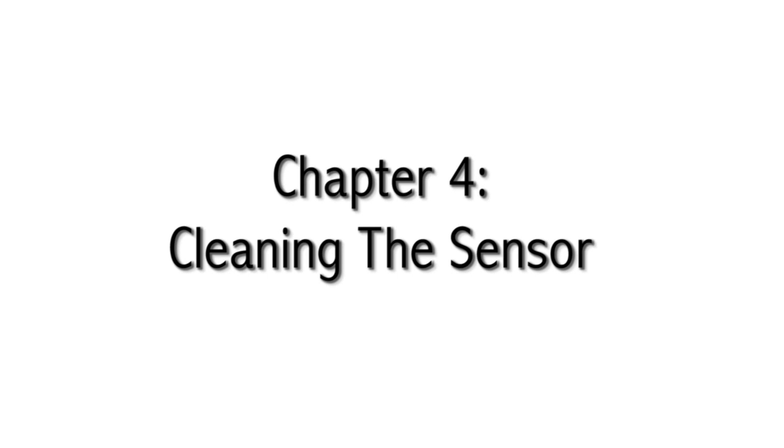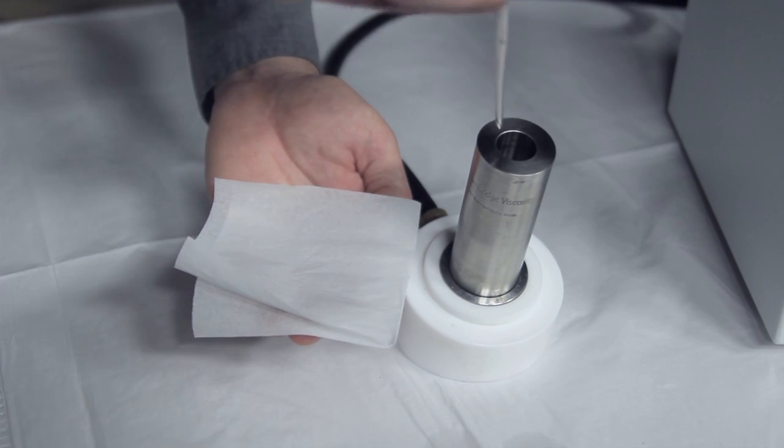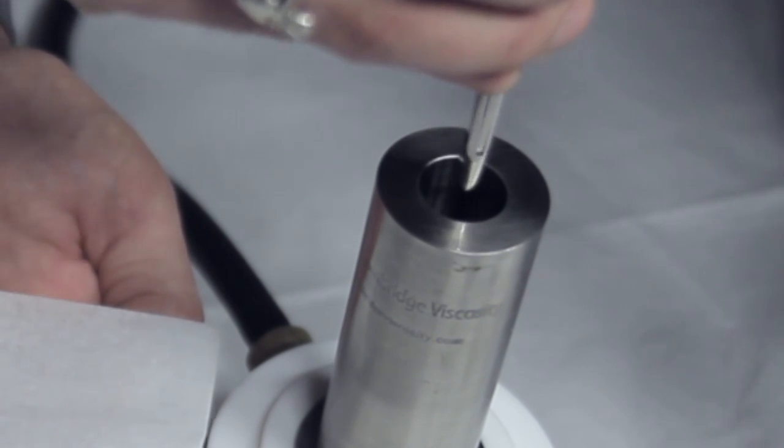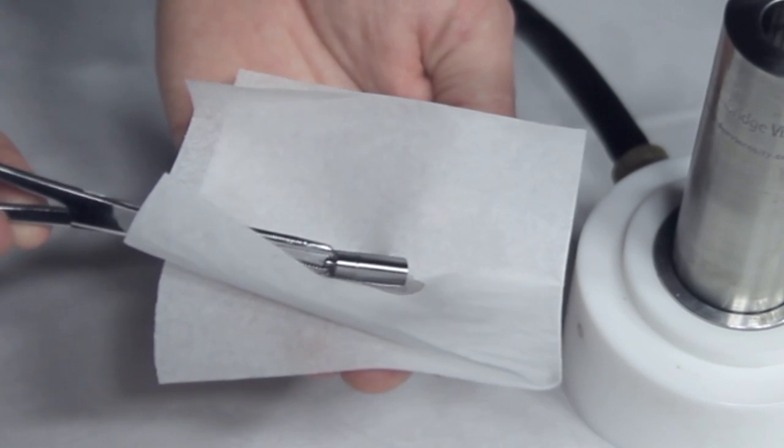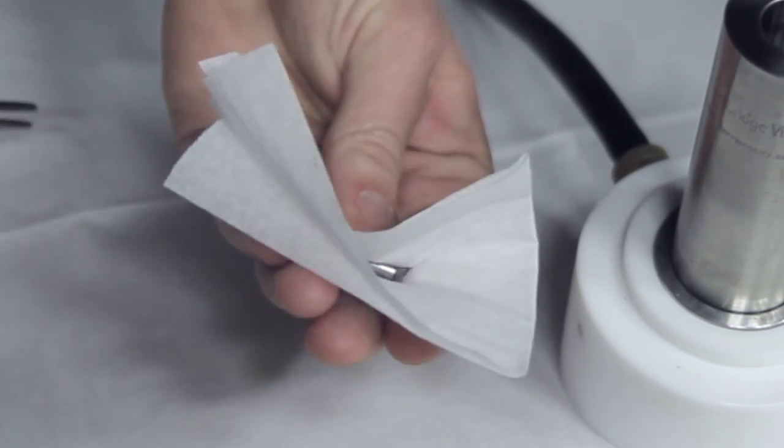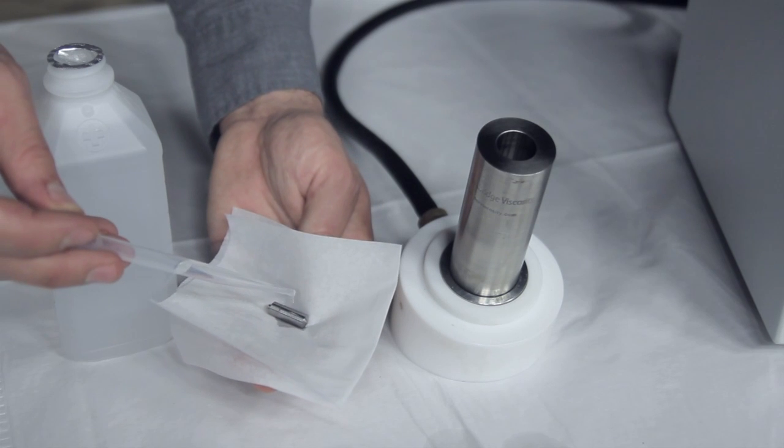Chapter 4: Cleaning the sensor. Use forceps to grab the piston by its nipple and slowly pull the piston out of the sensor. Use a Kimwipe or a lint-free tissue to wipe the sample off of the piston. Note, use solvent to clean the piston.